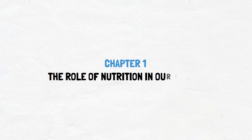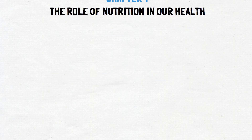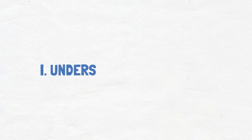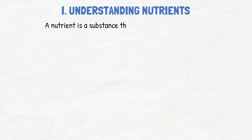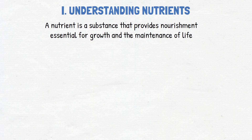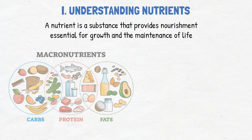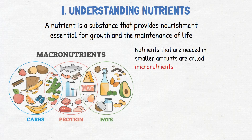Chapter 1: The Role of Nutrition in Our Health. Understanding Nutrients. A nutrient is a substance that provides nourishment essential for growth and the maintenance of life. Nutrients required in relatively large amounts are known as macronutrients, and nutrients that are needed in smaller amounts are known as micronutrients.